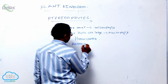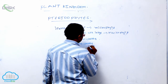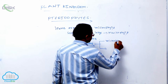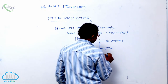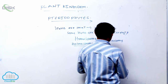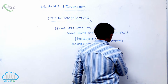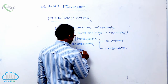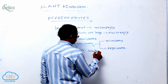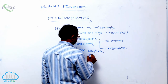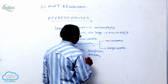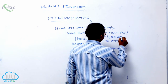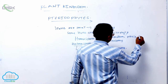Some plants are heterosporous — they produce two types of spores: microspores and megaspores (macrospores). That is known as the heterosporous condition. Examples of heterosporous plants are Selaginella and Salvinia. Examples of homosporous plants are Lycopodium, Pteris, and Dryopteris.